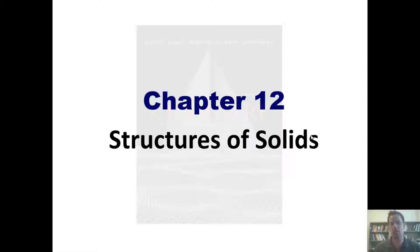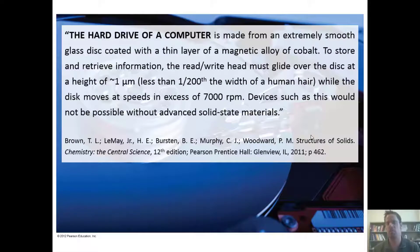To start, I wanted to call attention to something really interesting taken from our text. It says the hard drive of a computer is made from an extremely smooth glass disc coated with a thin layer of magnetic alloy of cobalt. To store and retrieve information, the read-write head must glide over the disc at a height of one micrometer, less than one two-hundredth the width of a human hair, while the disc moves at speeds in excess of 7,000 rpm. Devices such as this would not be possible without advanced solid-state materials.